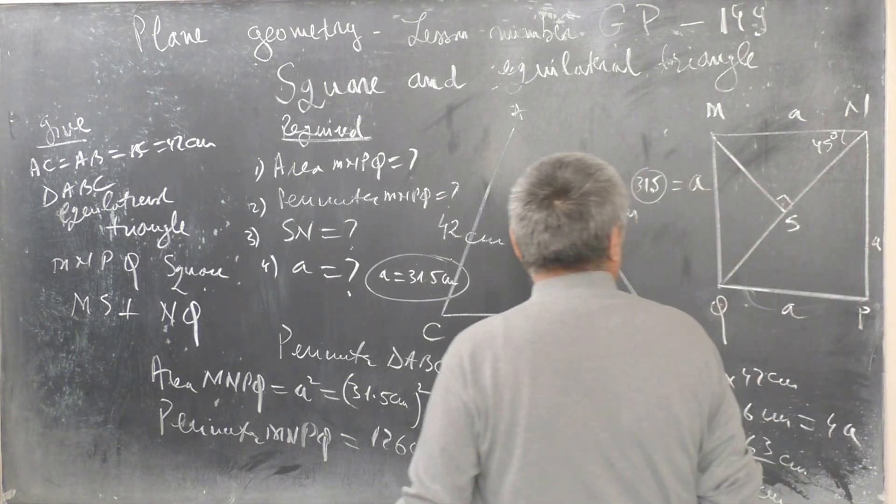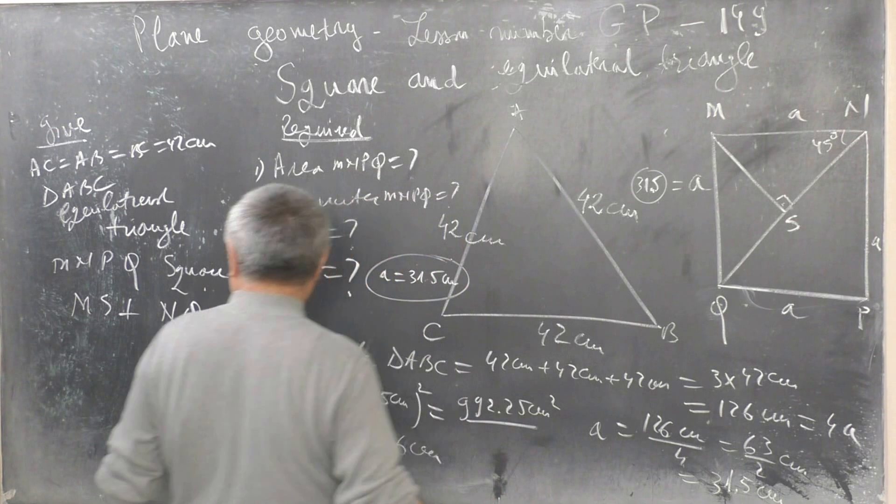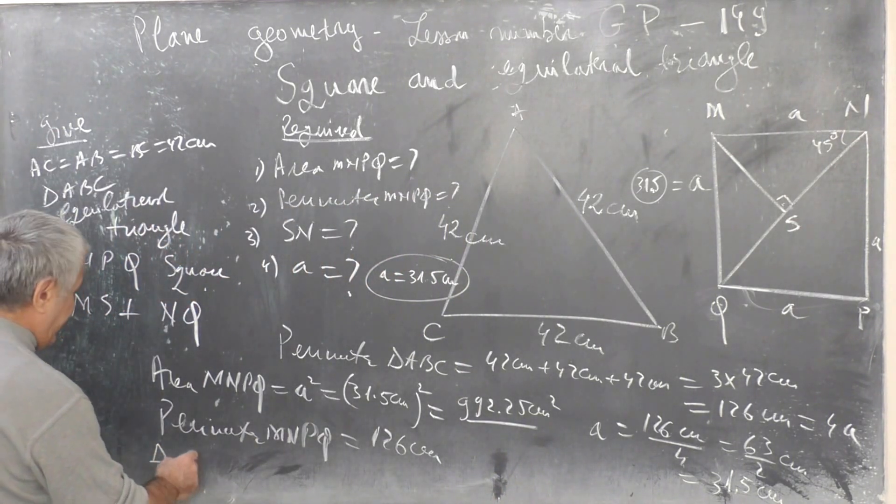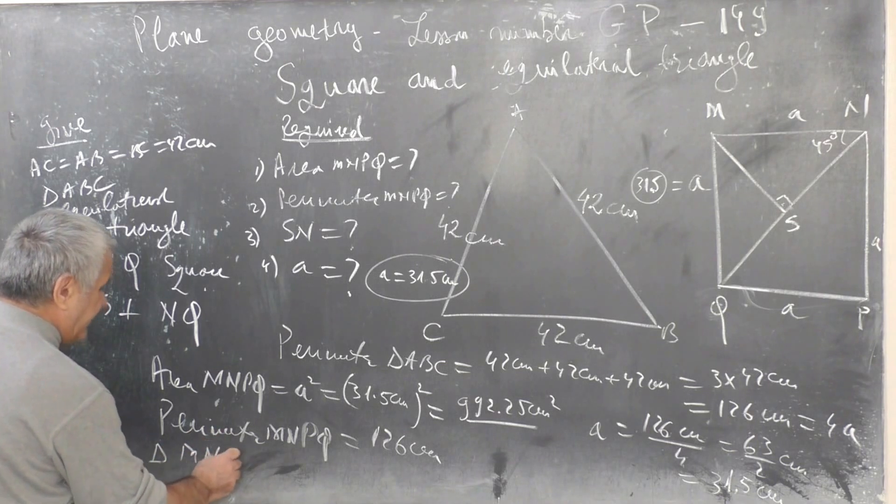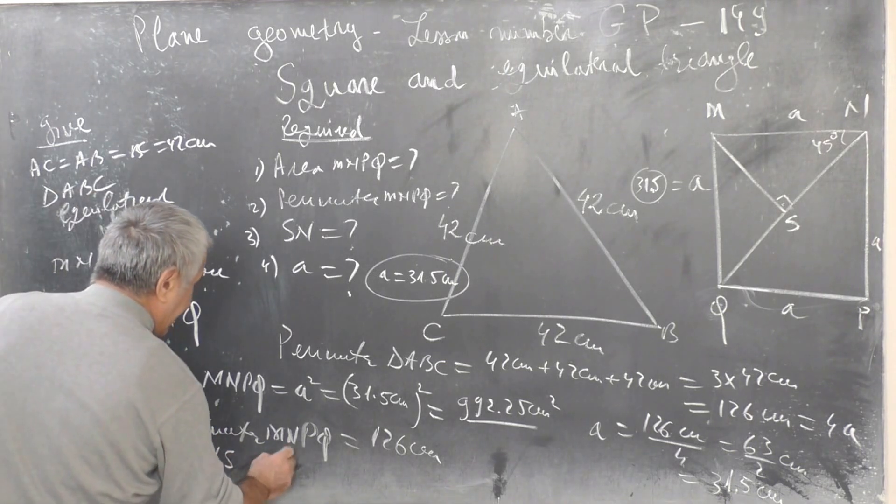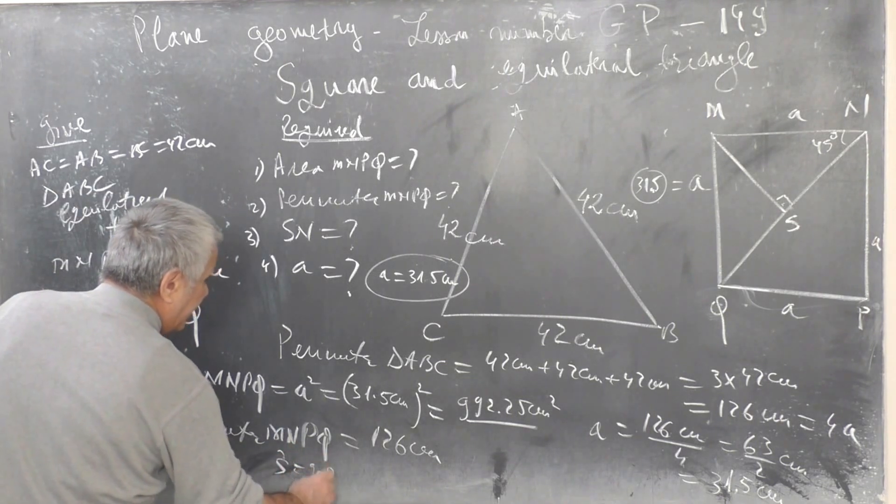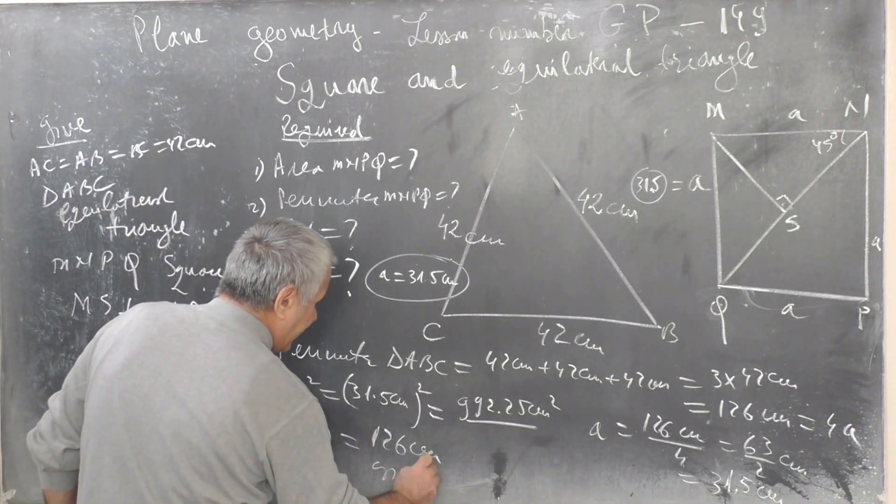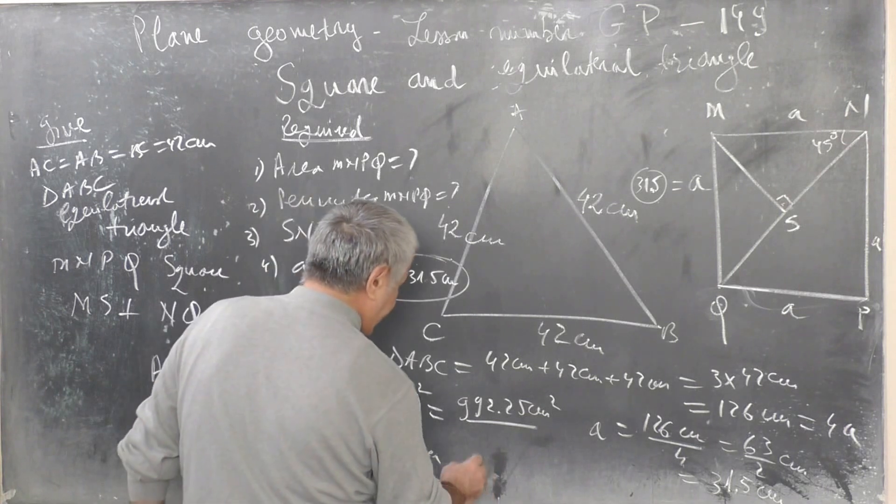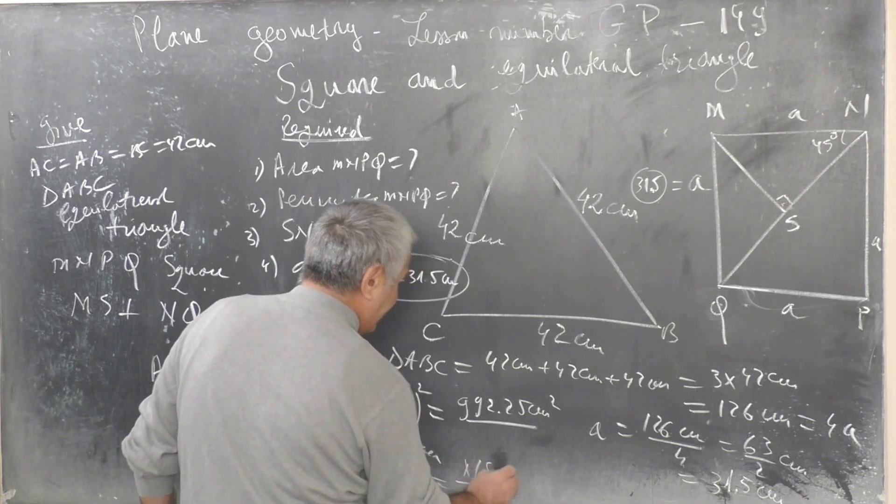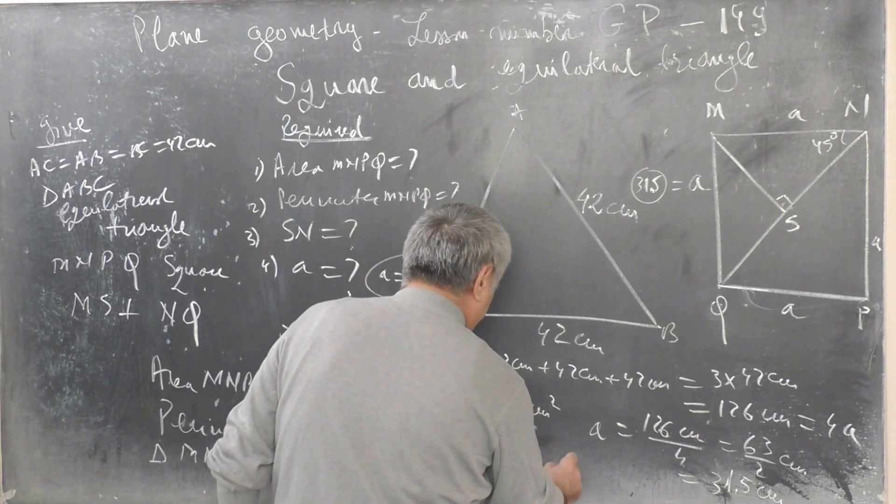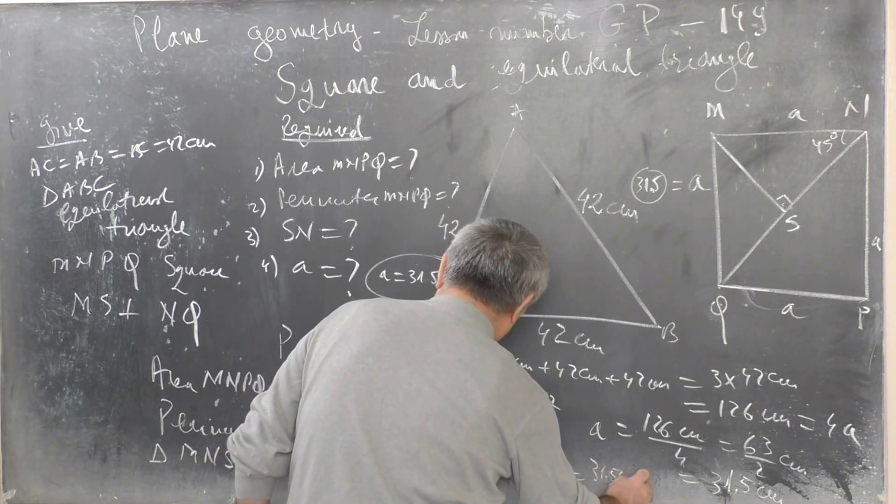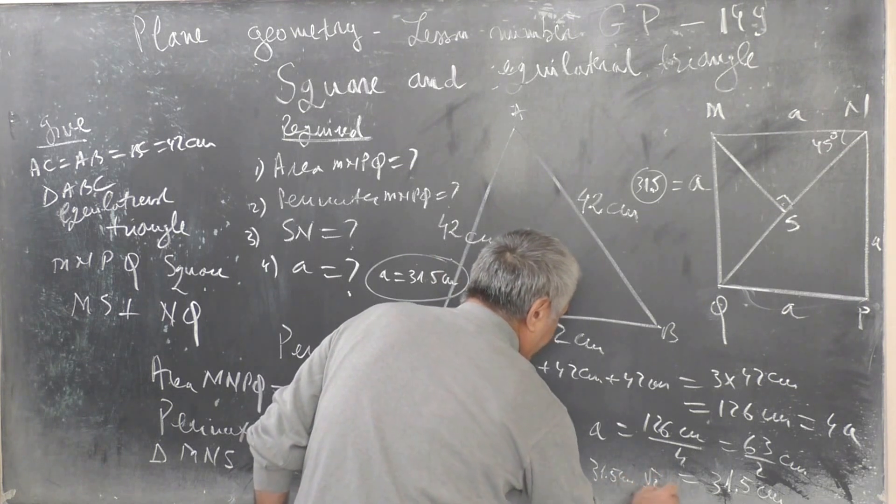Angle MNS equals 45 degrees. Cosine in triangle, right triangle, angle S equals 90 degrees. Cosine 45 degrees equals NS divided by NM. Projection equals NS equals 31.5 cm times radical 2 divided by 2.